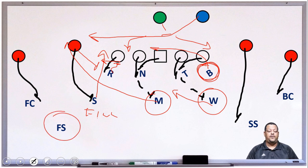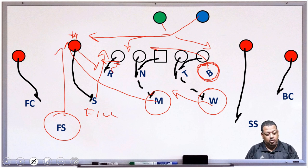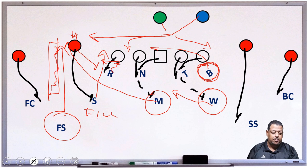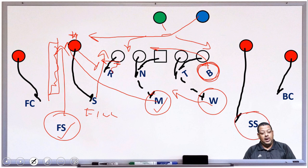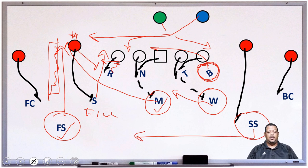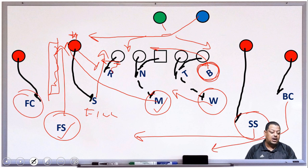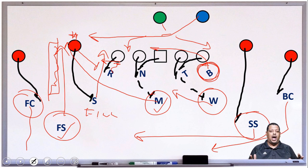Our field safety is our force player. Once he sees the slot back engage our Sam, he's going to come and become our force player. He's going to build the wall right here so that ball has to turn back inside. We're going to vice this player between our free safety and our Mike Backer. Our backside safety — same thing. He sees the block, hesitates, and once he sees empty hands, he pursues to the ball. Our field side corner is what we call secondary force. His job is to make sure that ball gets tackled at any cost — not worried about yardage, just making sure it's not a touchdown in case the ball carrier slips through.